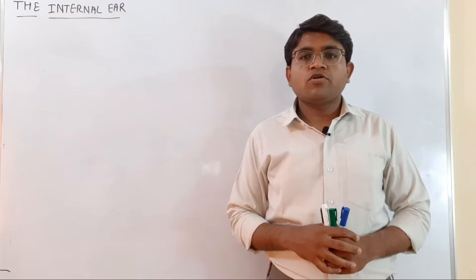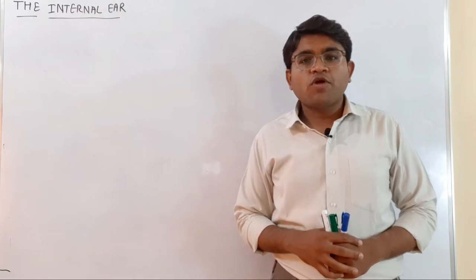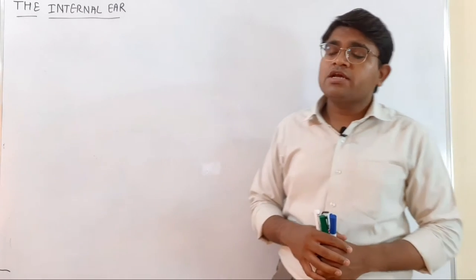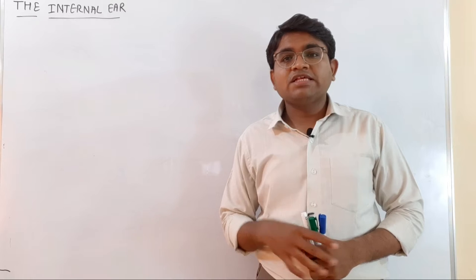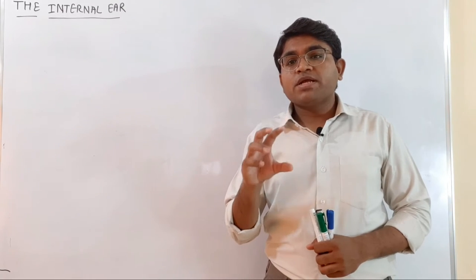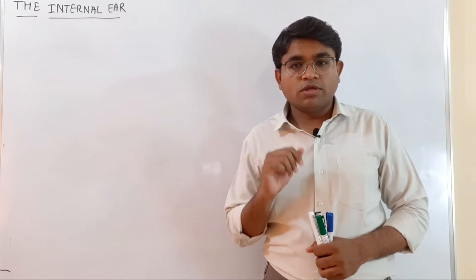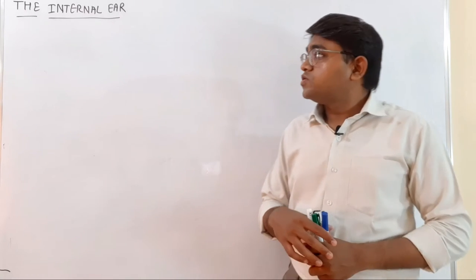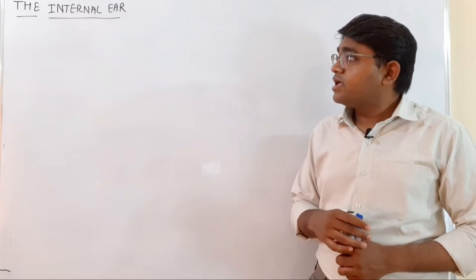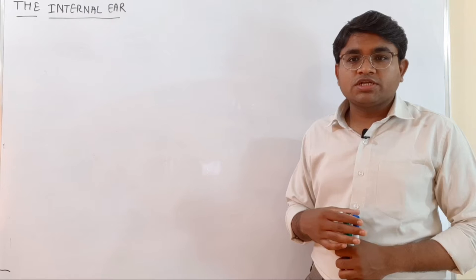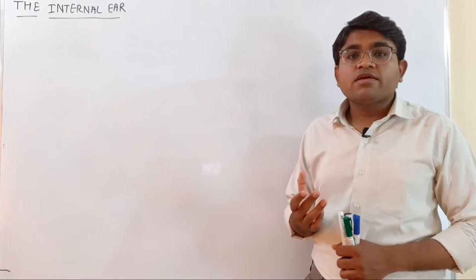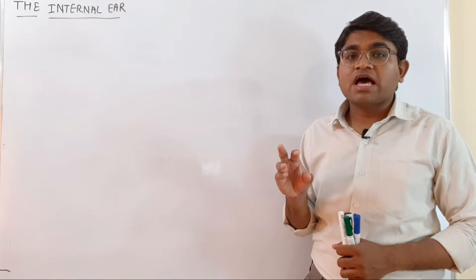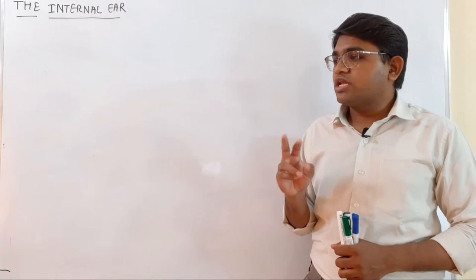Hello friends, myself Dr. Deepak, and today we are going to discuss about the anatomy of the internal ear. The internal ear is also known as the labyrinth, and this labyrinth lies within the petrous temporal bone in the lateral aspect of the cranial cavity. This labyrinth or the internal ear is formed by two structures: on the outer side, the bony labyrinth, and inside the bony labyrinth, there is a membranous labyrinth.